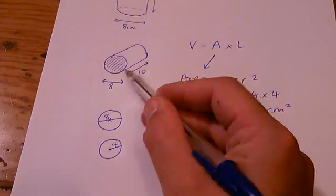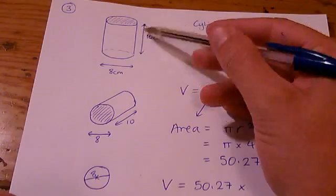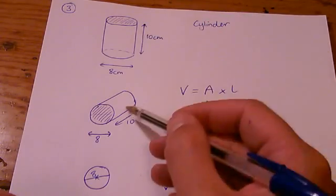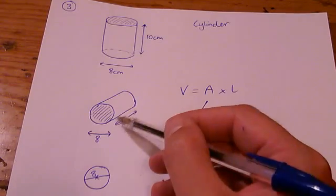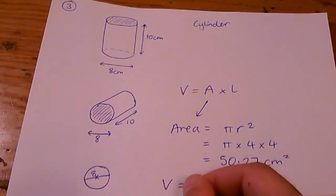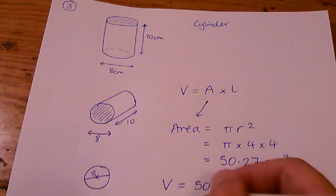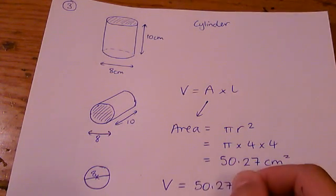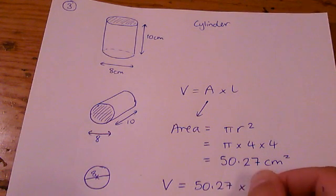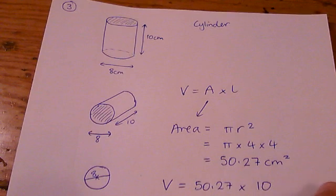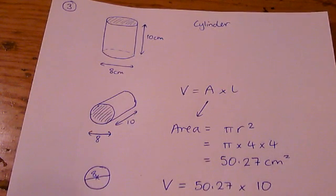Which is 10 in this case. When it was stood up, you might better describe that as a height, but now that I've drawn it lying on its side you can see that it's the same as before, it's the length: 10. And the answer on my calculator now is 502.65 to 2 decimal places, and that's in centimeters cubed.